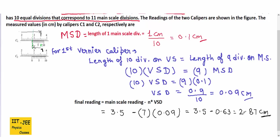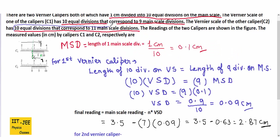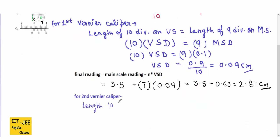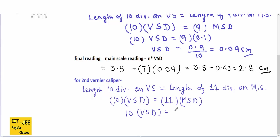Now we find the final reading of the second vernier caliper, starting with its VSD. For the second caliper, 10 equal divisions correspond to 11 main scale divisions, so 10 × VSD = 11 × MSD. Since MSD is 0.1 cm, we get 10 × VSD = 11 × 0.1 = 1.1 cm. Therefore VSD equals 1.1 divided by 10, which is 0.11 cm.